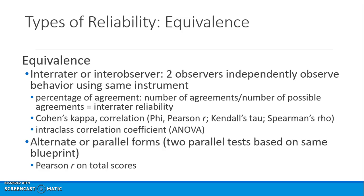Equivalence is another type of reliability. With inter-rater reliability, two observers independently observe behavior using the same instrument, and you look at percentage of agreement. Cohen's kappa and other correlation coefficients can be used depending on the level of data. You can also do an intraclass correlation coefficient using ANOVA, allowing two or more rater groups. Alternatively, you can create alternate versions of the instrument and calculate parallel reliability using Pearson r on total scores.